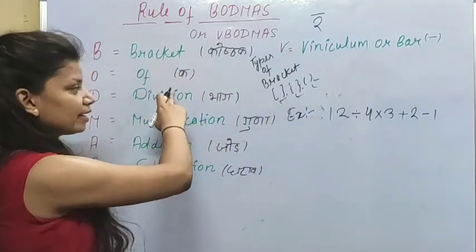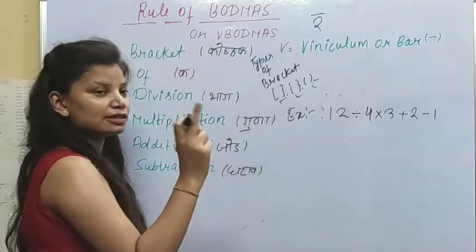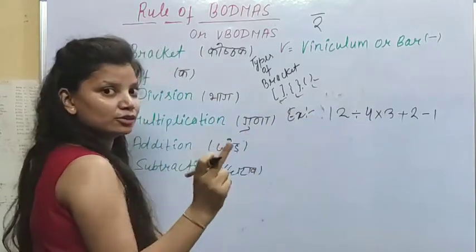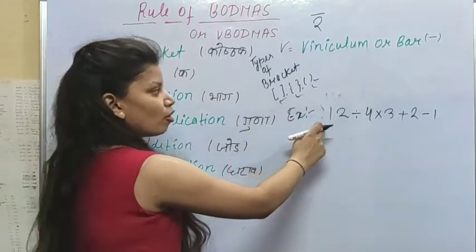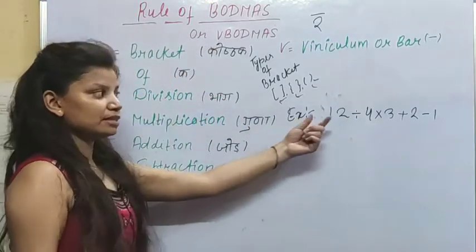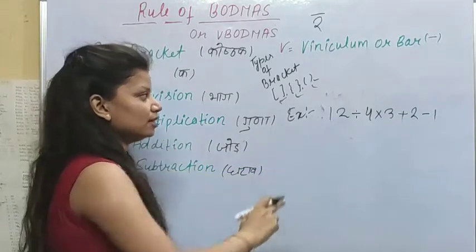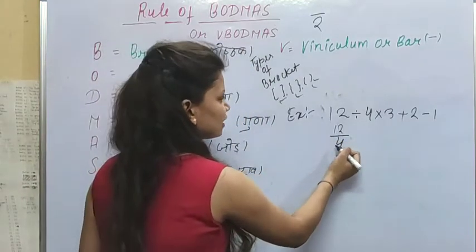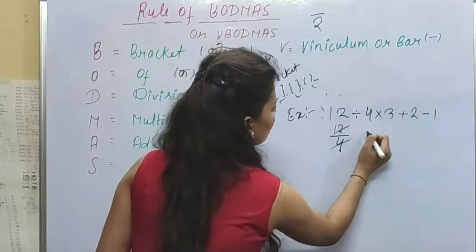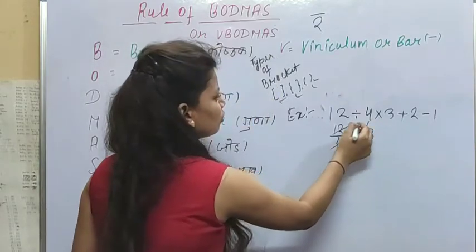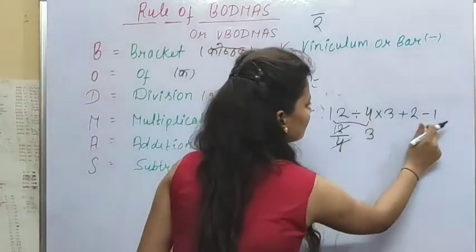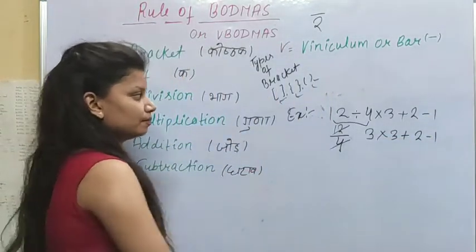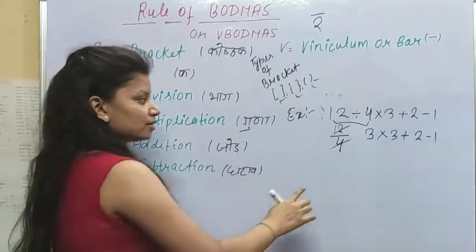First, we look for brackets — there are none in this question. There is no 'Of' either. So first we do Division: 12 divided by 4 equals 3. Now we have solved that part. Next, we solve Multiplication: 3 multiplied by 3 equals 9.